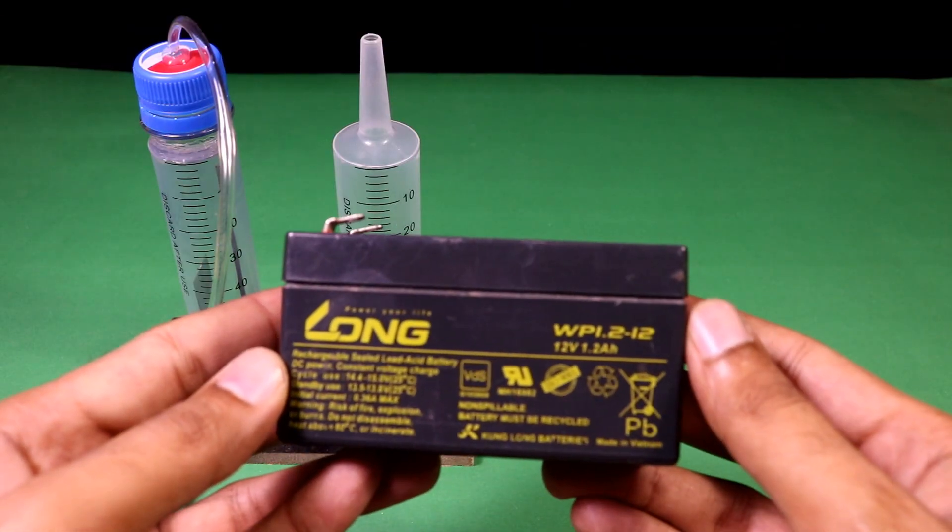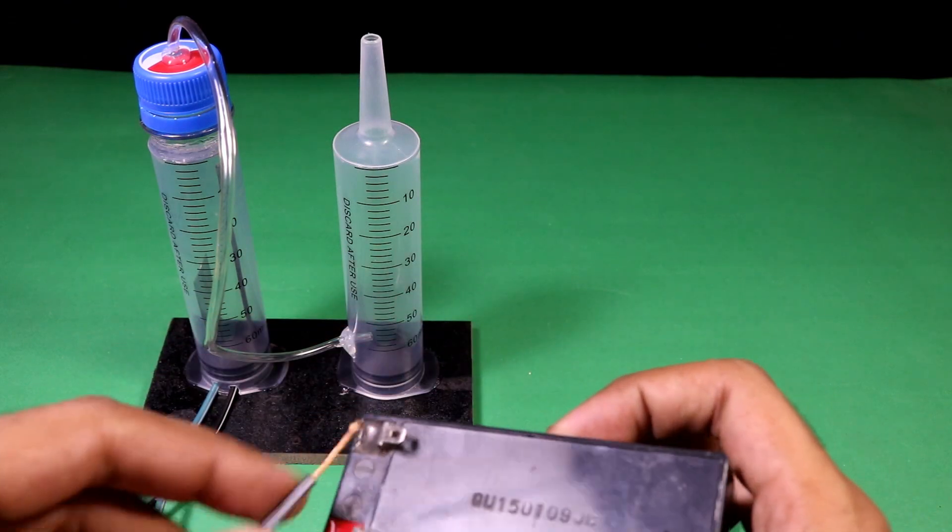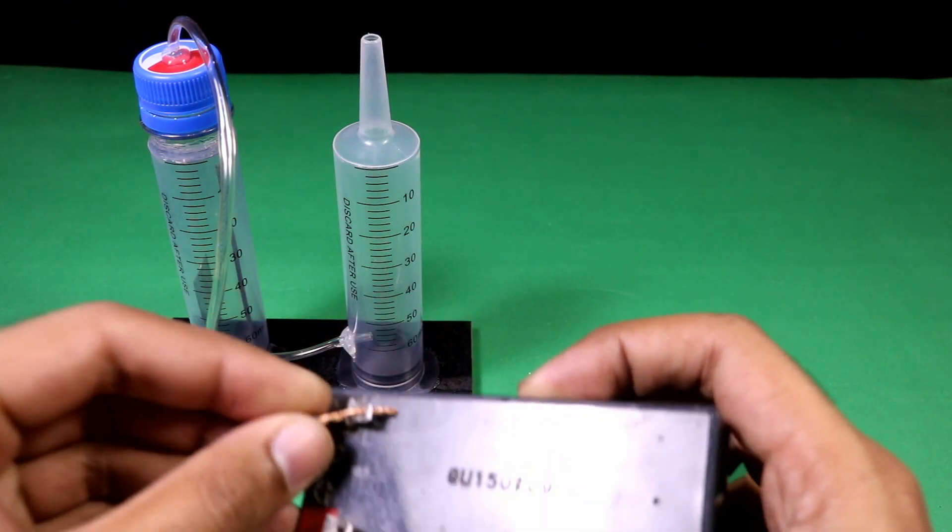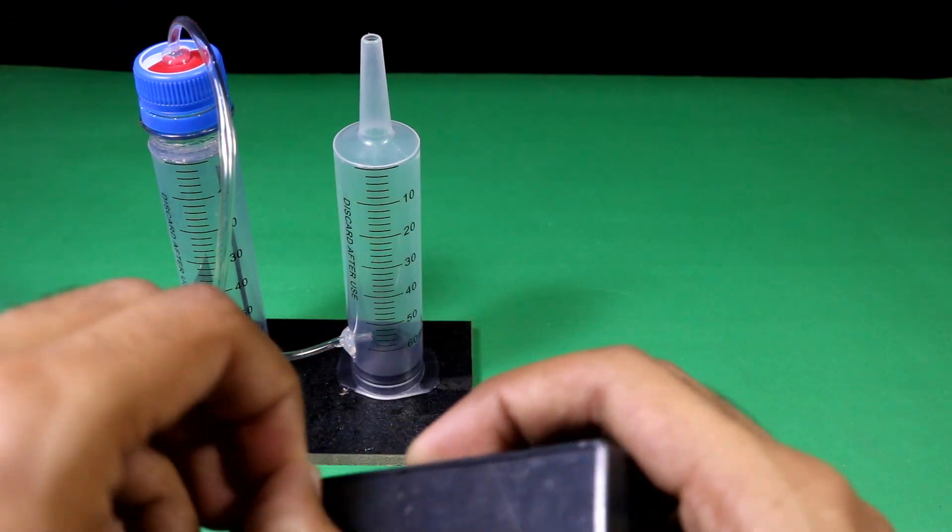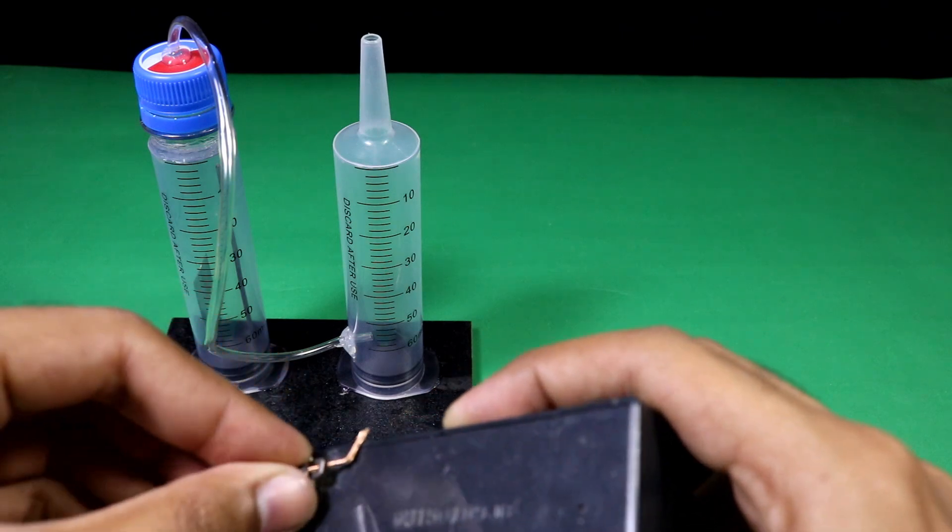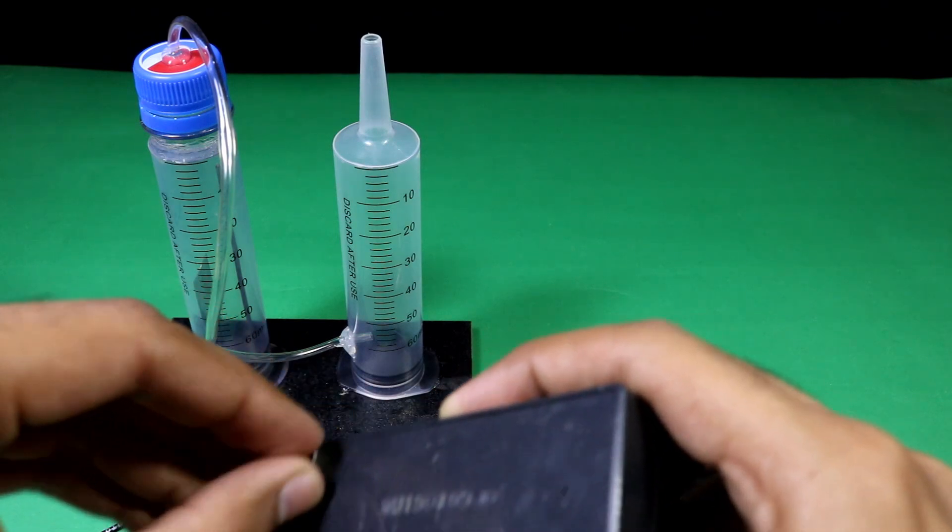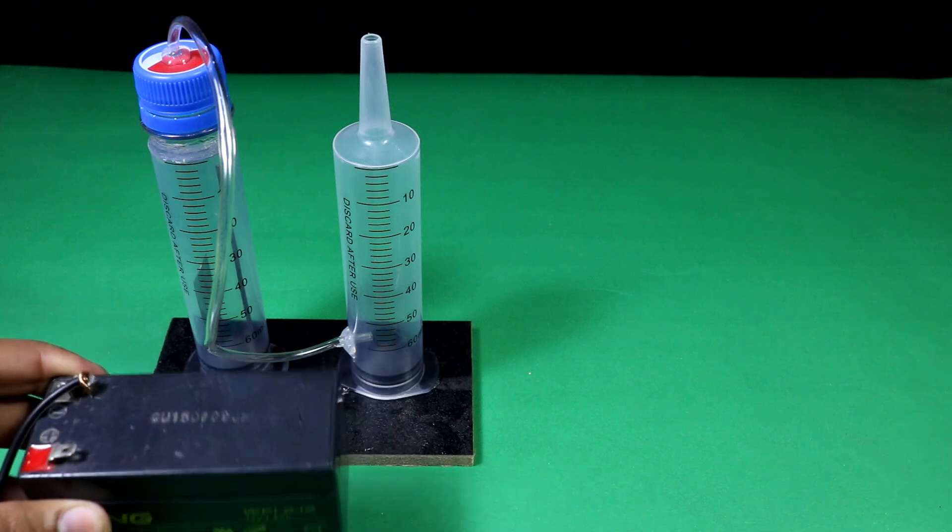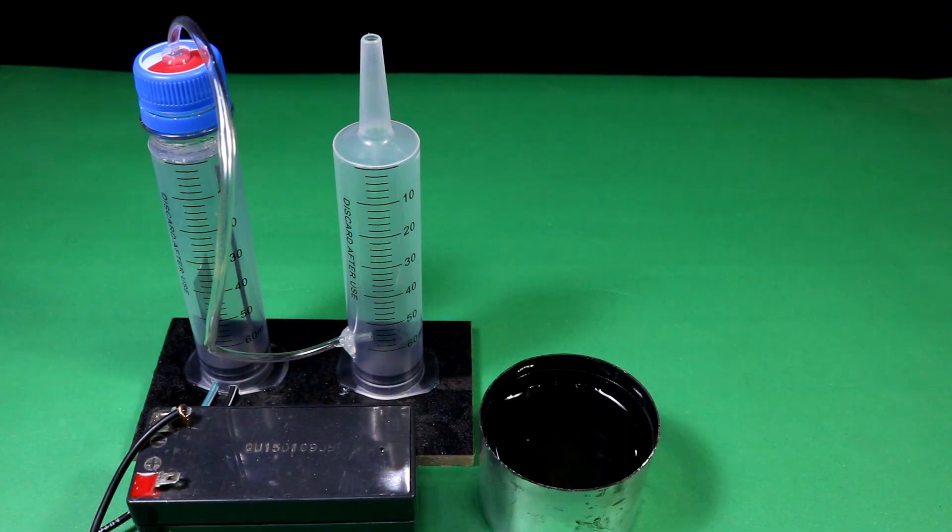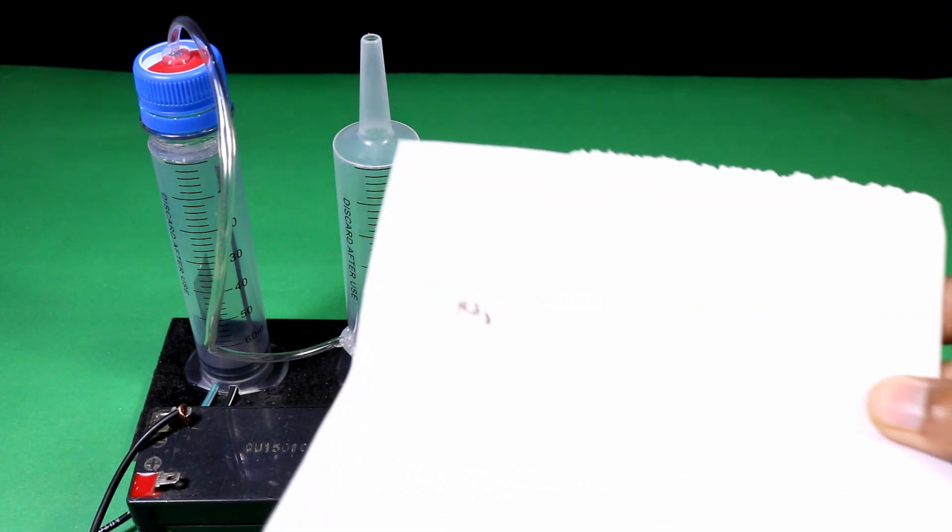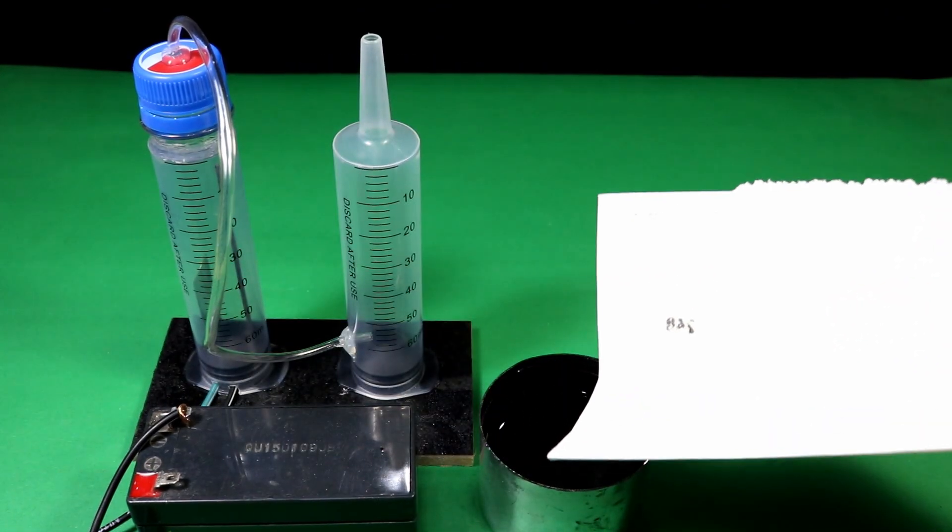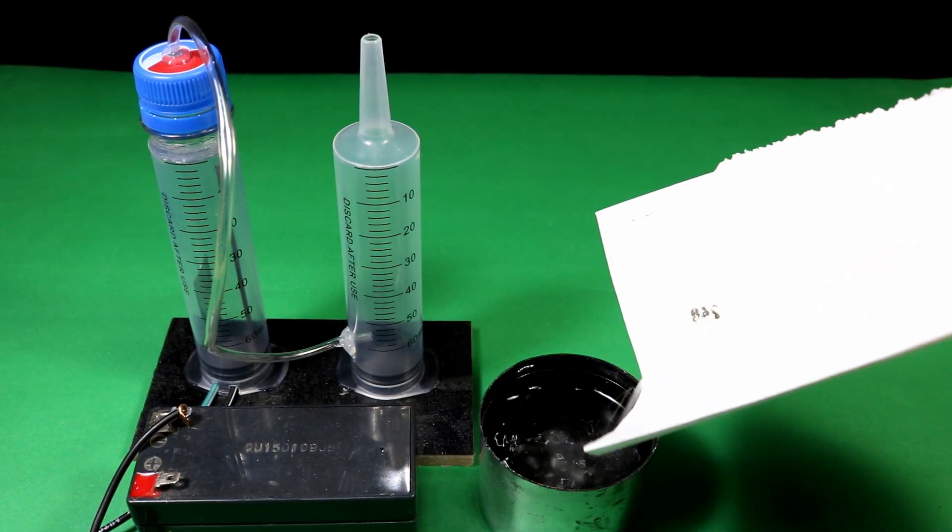Our hydrogen generator is almost ready. Now I am using a 12 volt battery to power this generator. For the electrolyte, I am using a mixture of 90 percent water with 10 percent table salt.